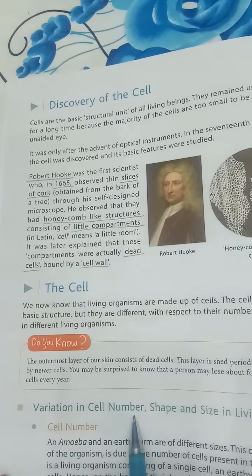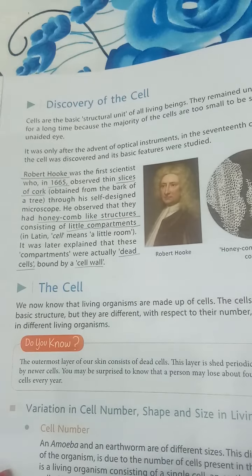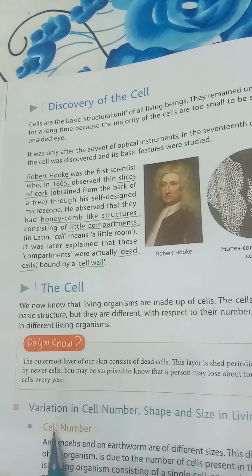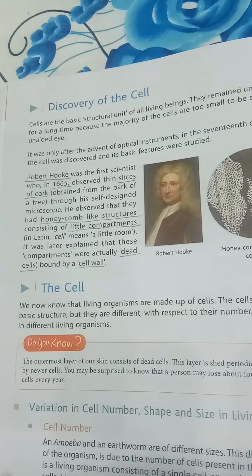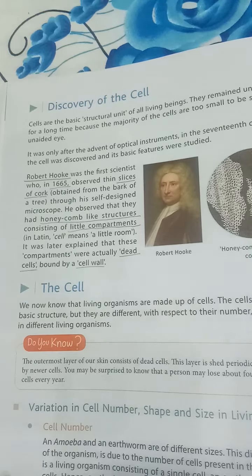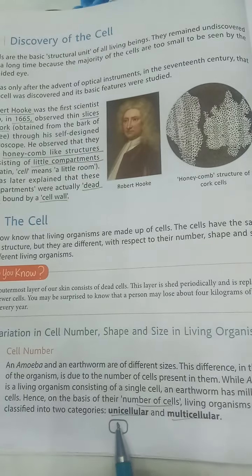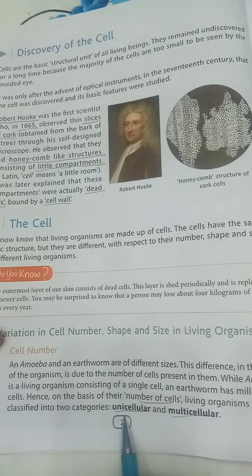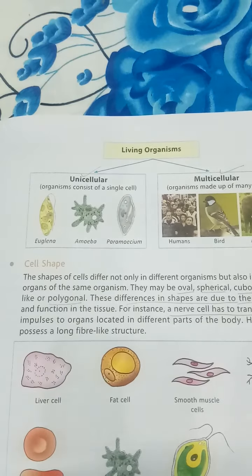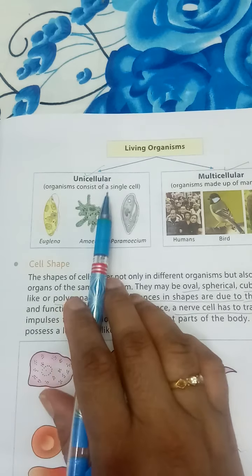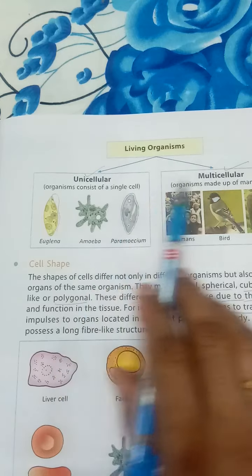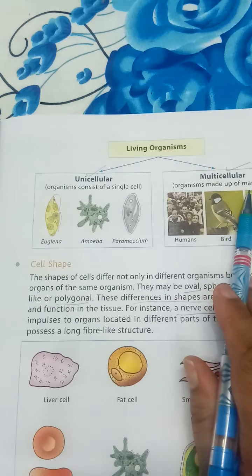Now we will study about variation in cell number, shape, and size in living organisms. Regarding cell number, organisms are classified into two categories: unicellular and multicellular. Unicellular organisms are those which are made up of only one cell — examples include Euglena, Amoeba, and Paramecium, which consist of only a single cell.